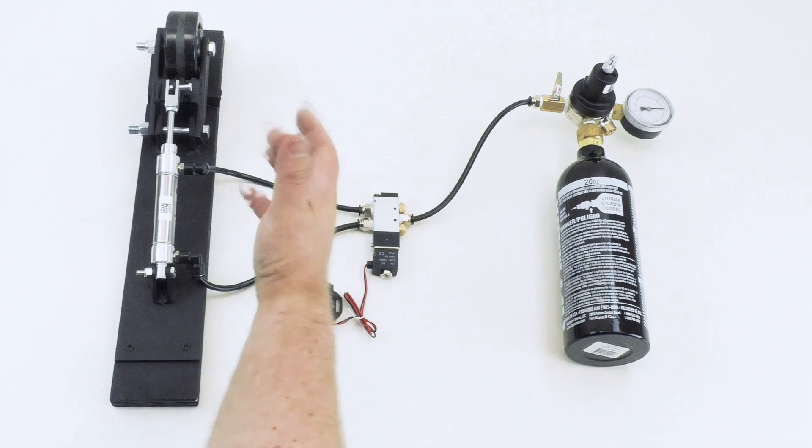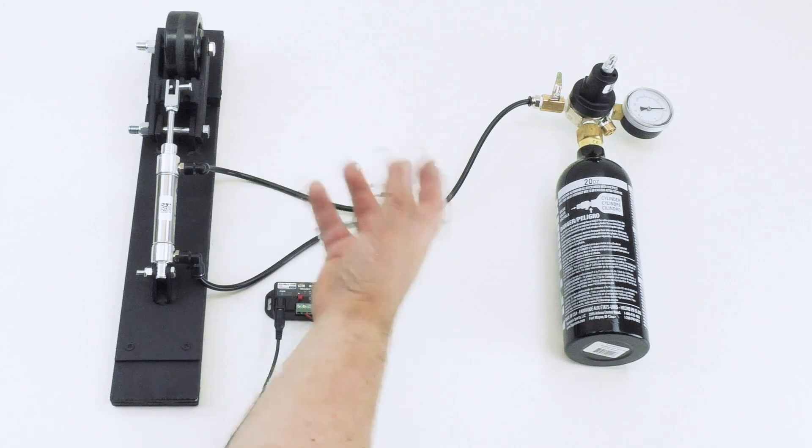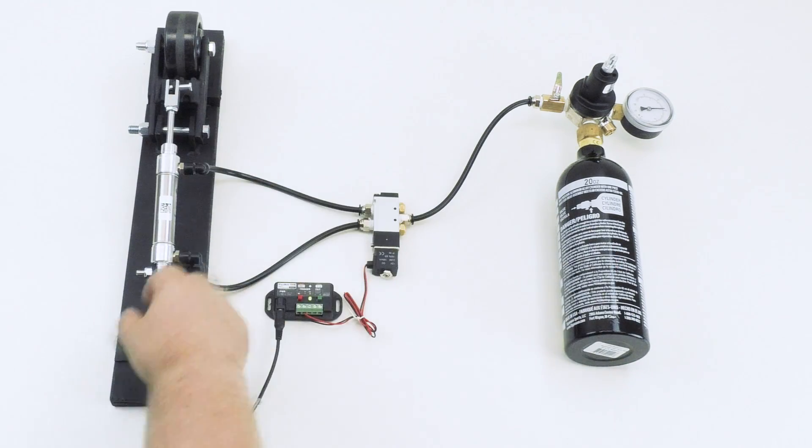But what if you want to use a pneumatic in a place where you don't have access to an air compressor that's plugged in all the time? What if you want to do a mobile application, or you want to do this somewhere like in a field on a farm where you can't run a huge long air line all the way from your air compressor out to the middle of the field?